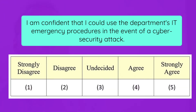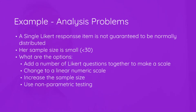The way she's going to score this is using Likert data. At the end of the course, she will present this statement: 'I am confident that I could use the department's IT emergency procedures in the event of a cybersecurity attack,' and ask the participants to rate it from strongly disagree — scored as 1 — to strongly agree — scored as 5. Here we run into some analysis problems: a single Likert response item is not guaranteed to be normally distributed.